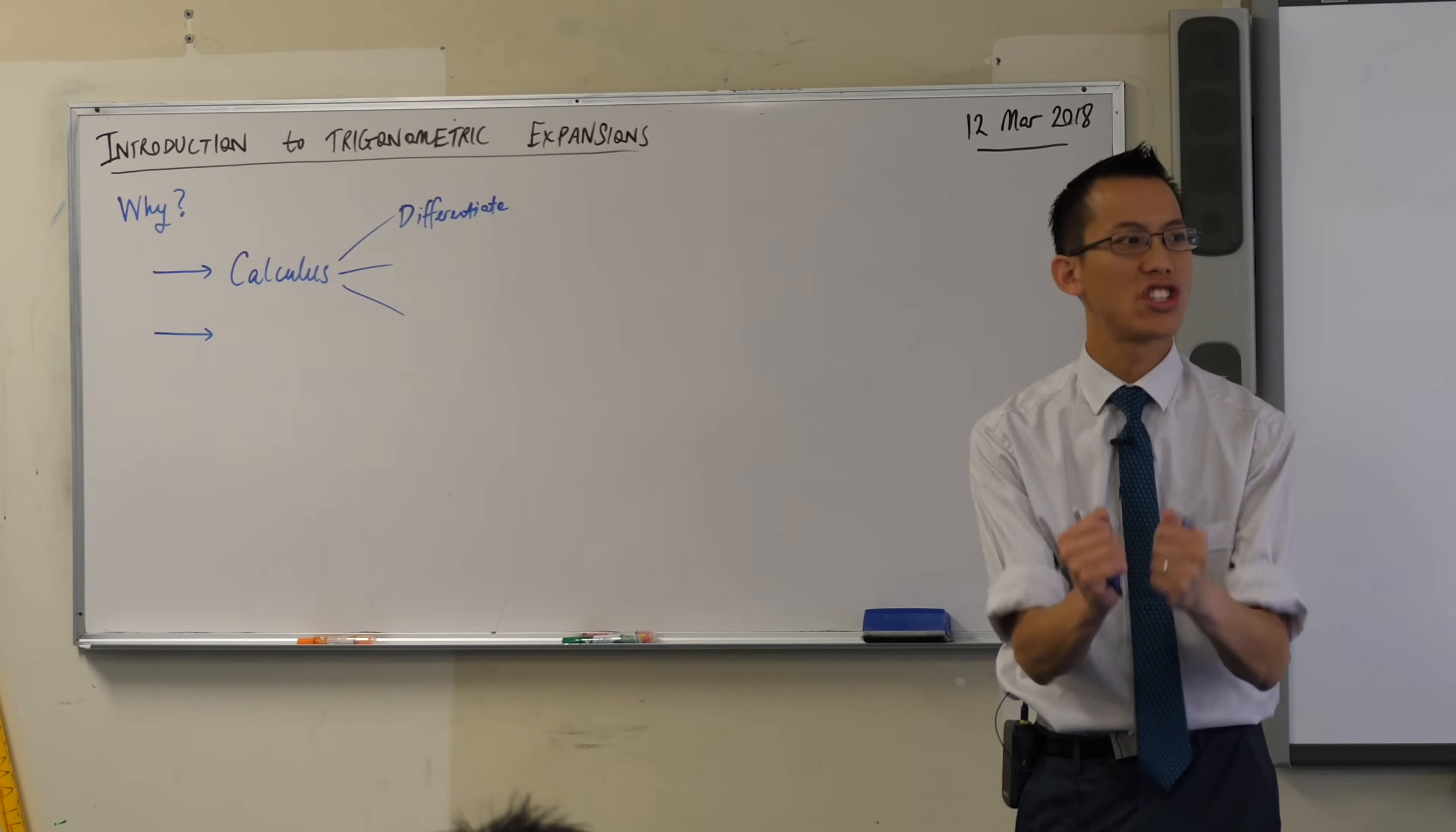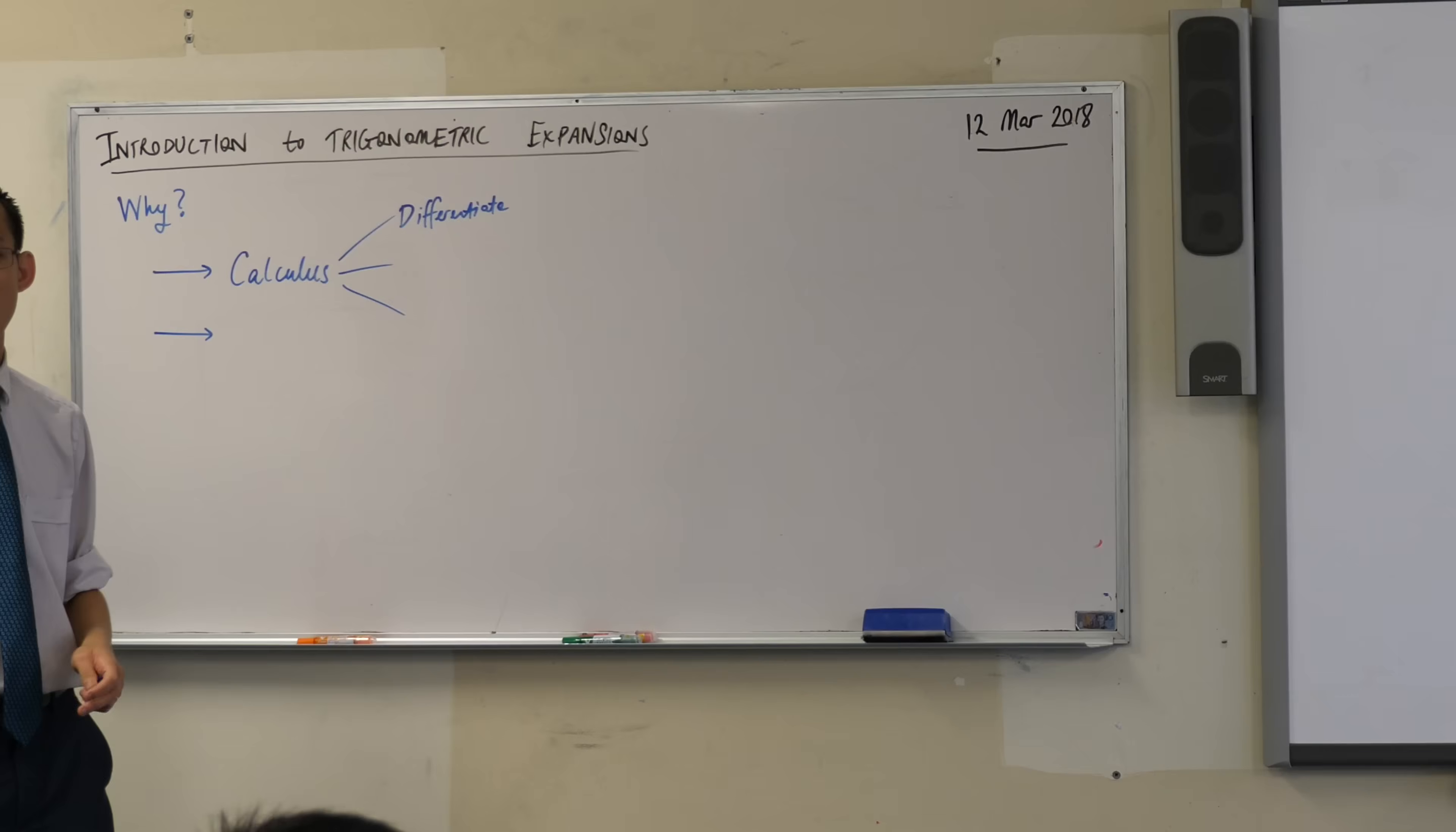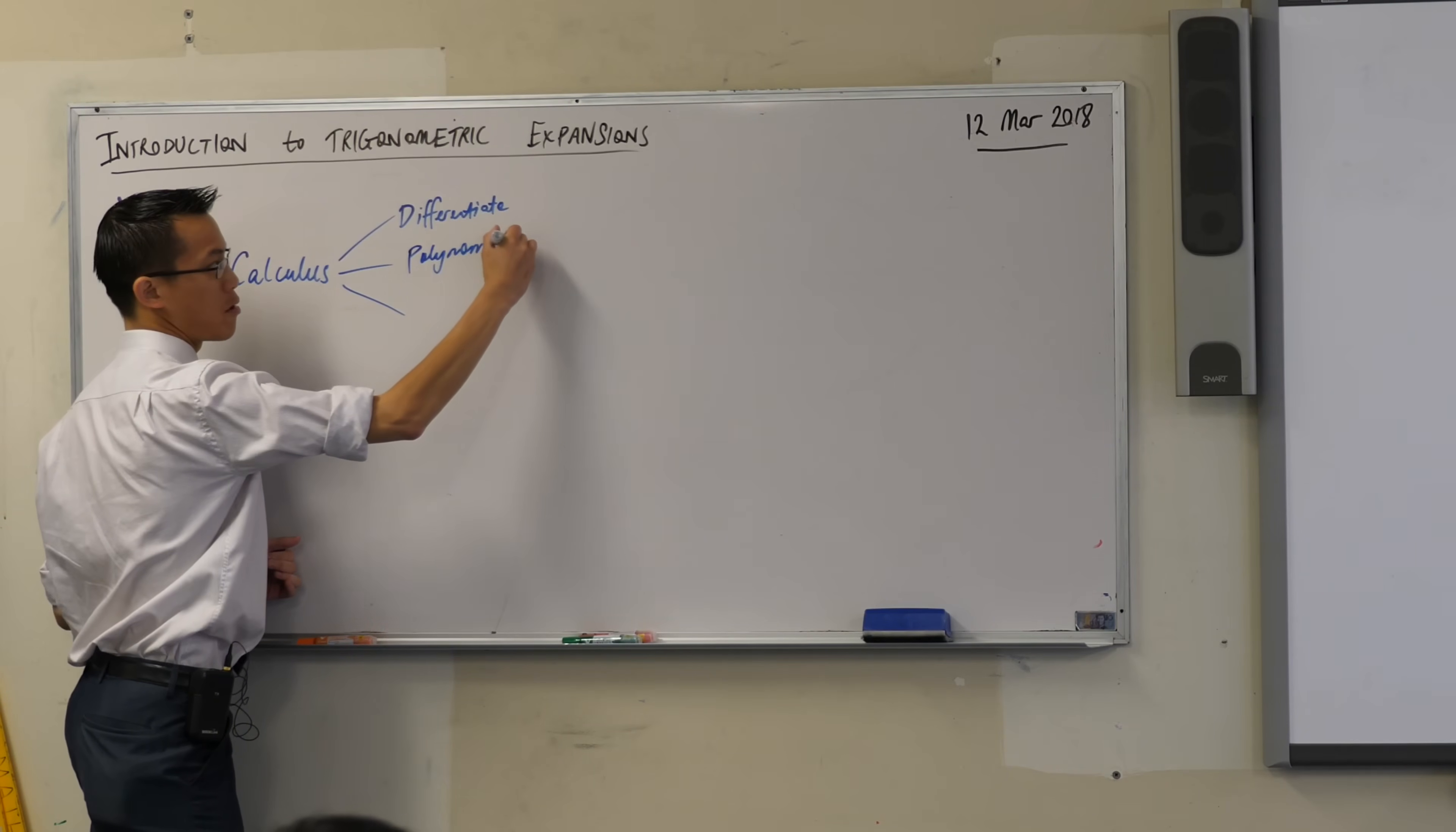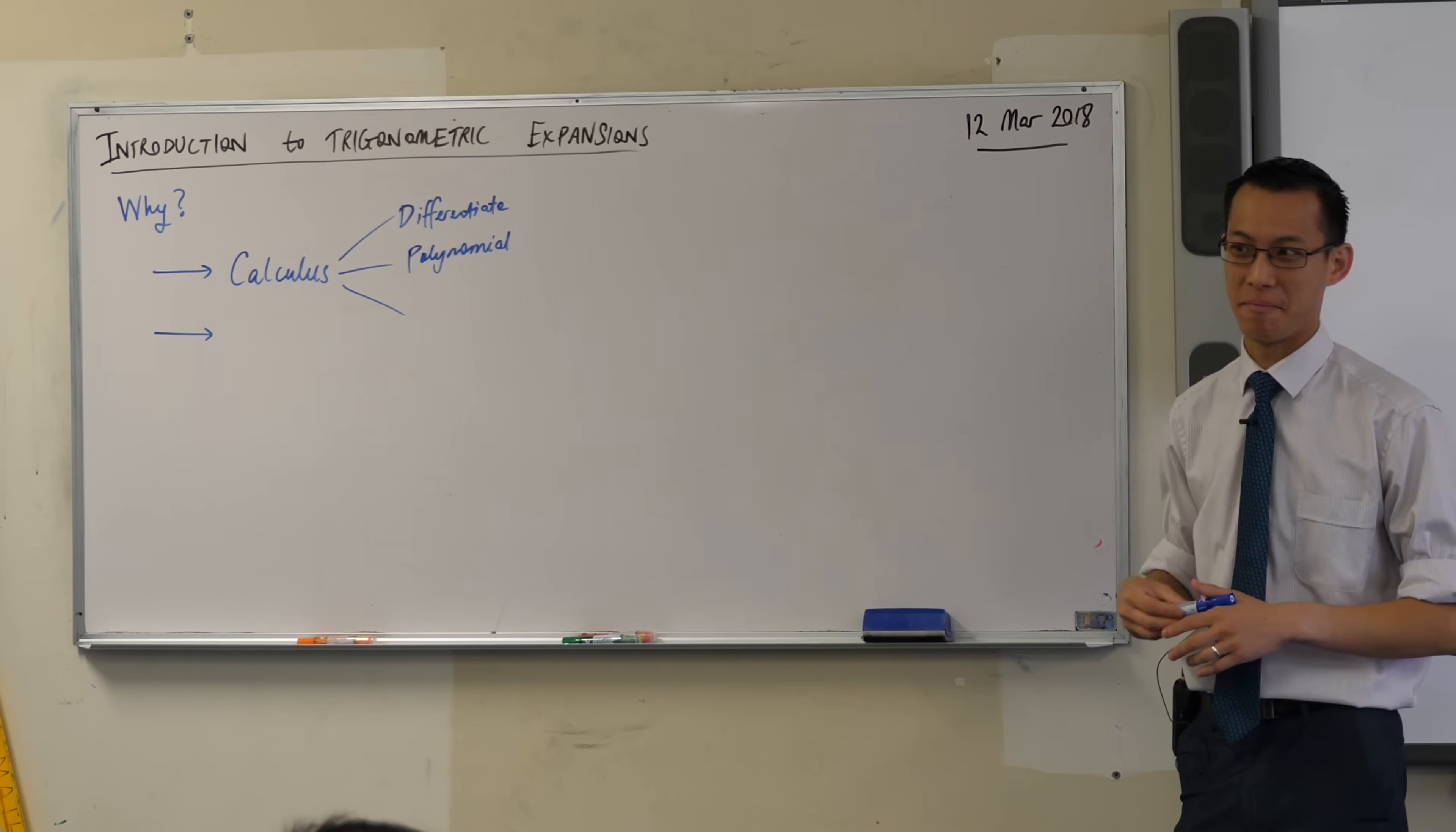So you learned to differentiate. What kinds of functions did we start off learning to differentiate? We looked at linear functions, we looked at quadratics, we looked at anything basically where it's a polynomial. So we looked at polynomial functions because they were nice and neat and the rule for differentiating them is really easy to learn.